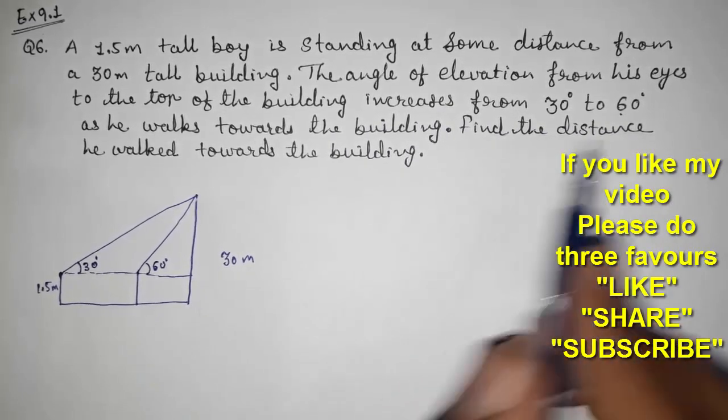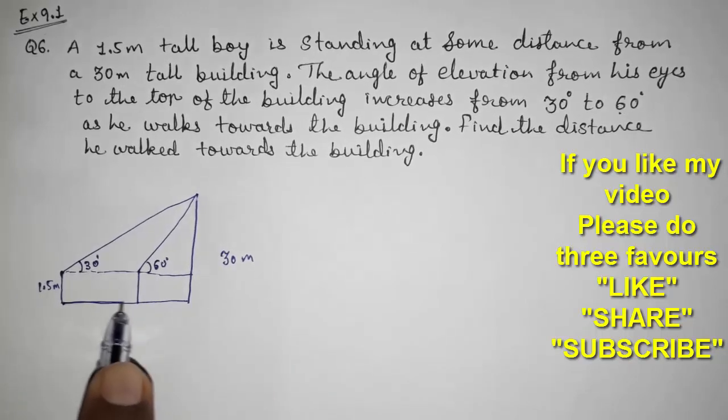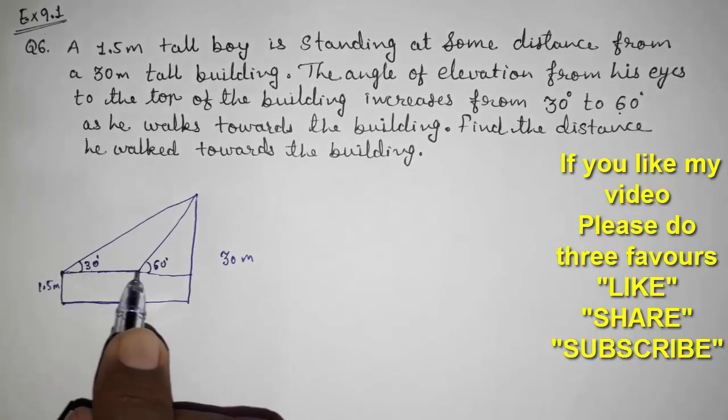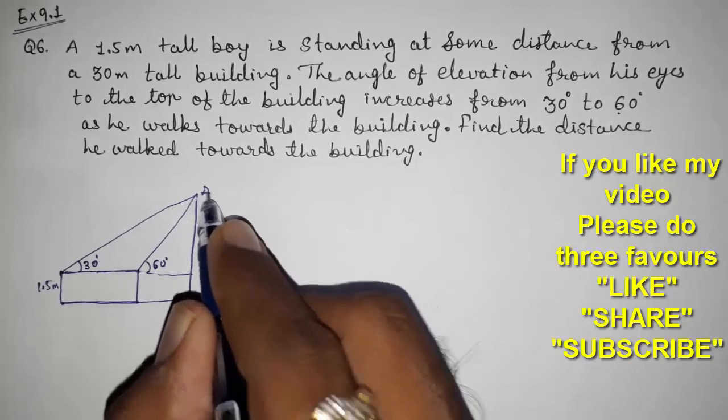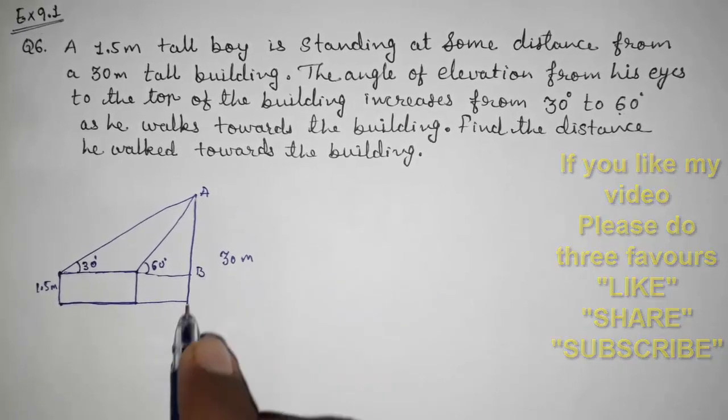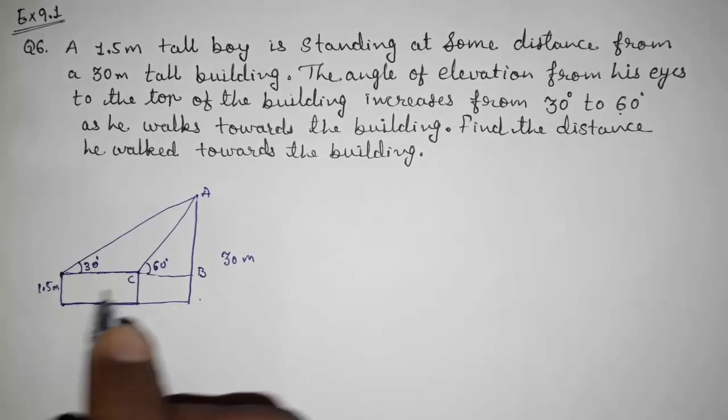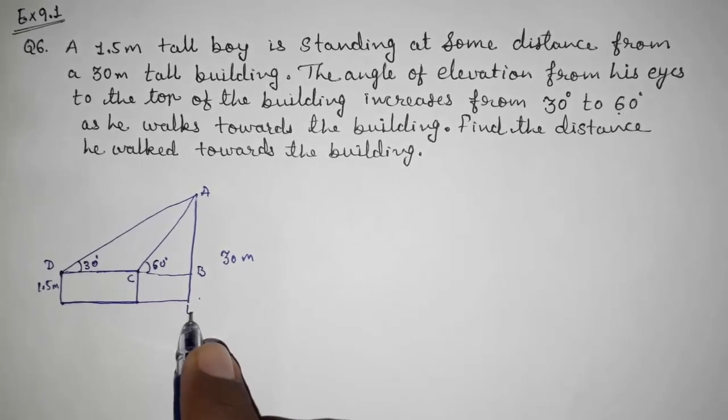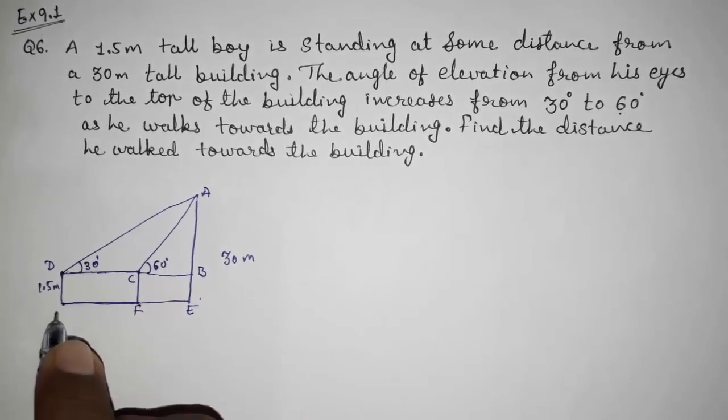Now find the distance he walked. That means we have to find out this distance. I am giving names to the different points: A, B, C, and D. Take it as E, F, G.